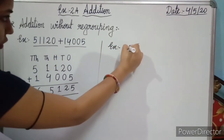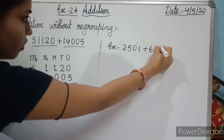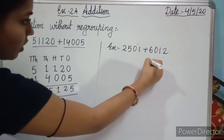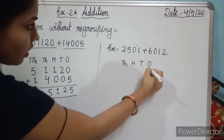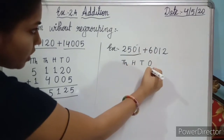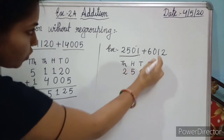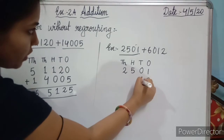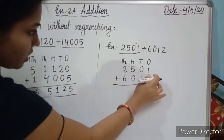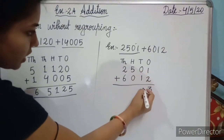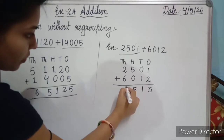Here is another example: 2,501 plus 6,012. We arrange in ones, tens, hundreds, thousands. We write 1, 0, 5, 2 and below 2, 1, 0, 6. Adding each column: 2 plus 1 is 3, 0 plus 1 is 1, 5 plus 0 is 5, and 6 plus 2 is 8. So the sum is 8,513.